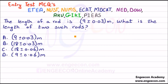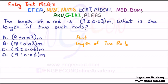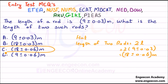Here we have a simple MCQ relevant to entrance examinations. The length of a rod is 9 ± 0.03 meters. What is the length of two such rods? The length of two rods equals 2L. With L = 9 ± 0.03, multiplying by 2 gives 18 ± 0.06 meters. So C is the correct answer.